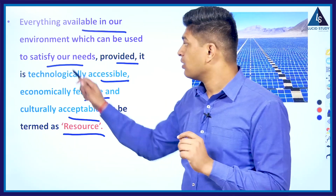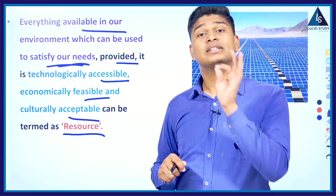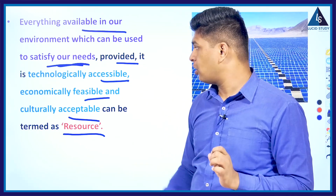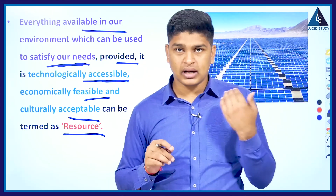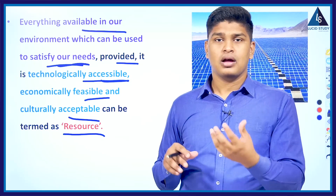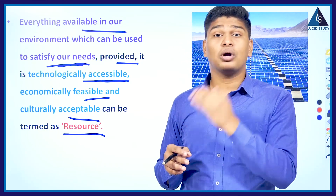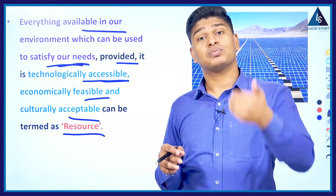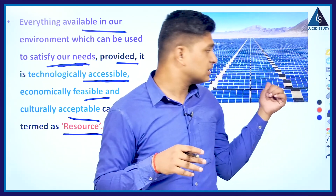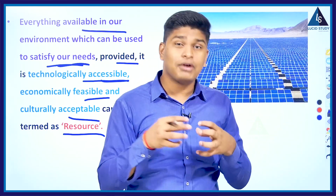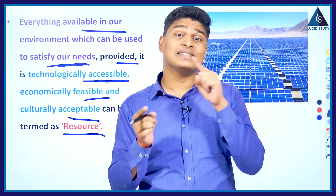The first thing a resource must cater to is that it should be able to satisfy the need. But that is not the only point — that particular resource also has to be technologically accessible. For example, solar energy and wind energy: at one point there were no solar panels and no wind energy harnessing, even though wind and sun existed. But because of technological developments, people are now able to establish solar panels that absorb sunlight and convert it into electrical energy — meaning solar energy is technologically accessible.